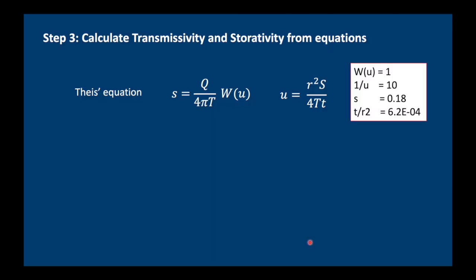And the next step is to calculate transmissivity and storativity from the equations. We calculate transmissivity from this equation here. So transmissivity equals 2,500 cubic meters per day divided by 4 times pi times the drawdown which is from our match point, so 0.18, and times it by the well function which conveniently from our match point has been taken as 1. So it's quite easy to calculate and we end up with the transmissivity of just over 1,100 meters squared per day.